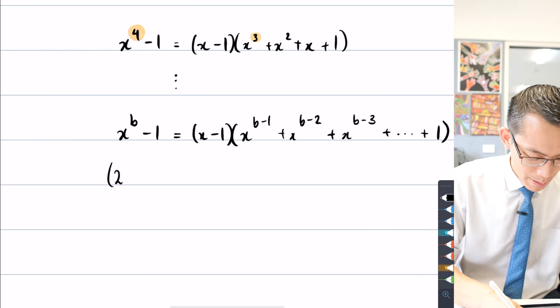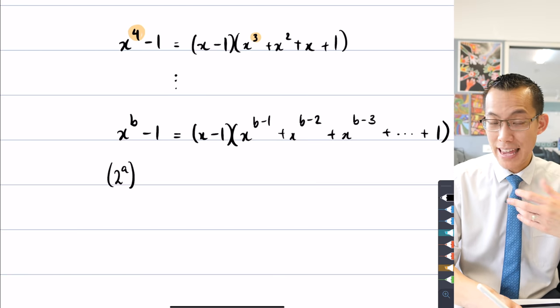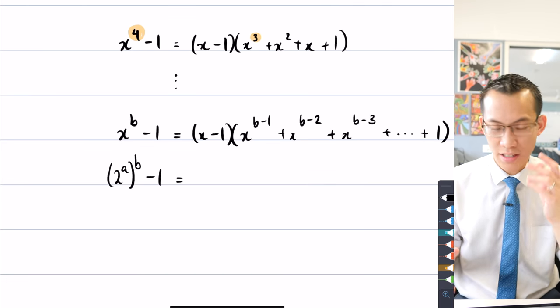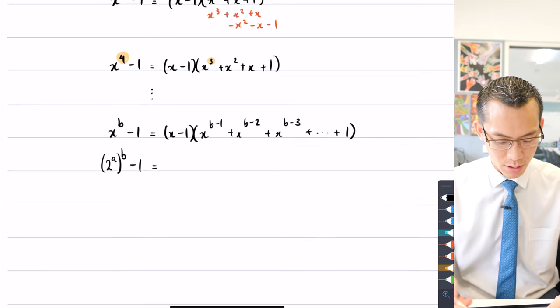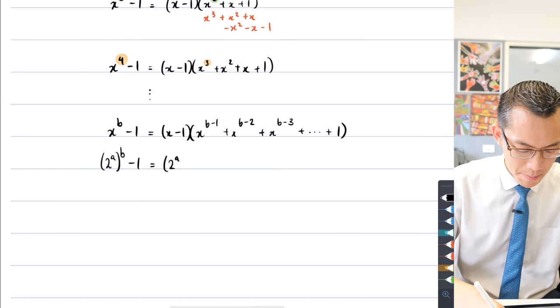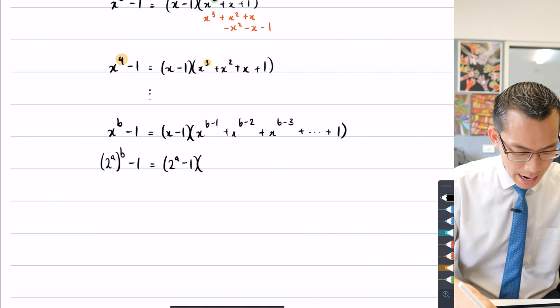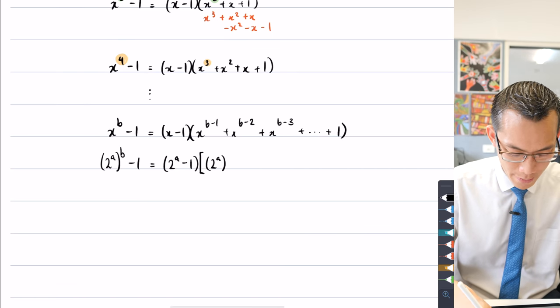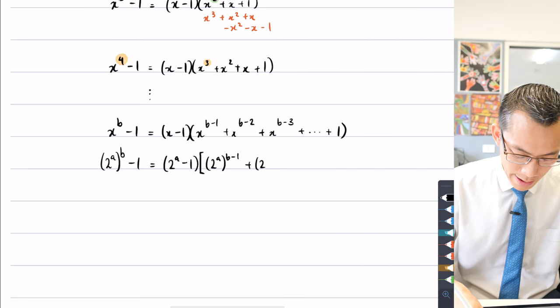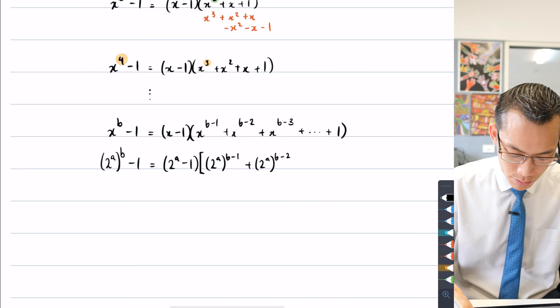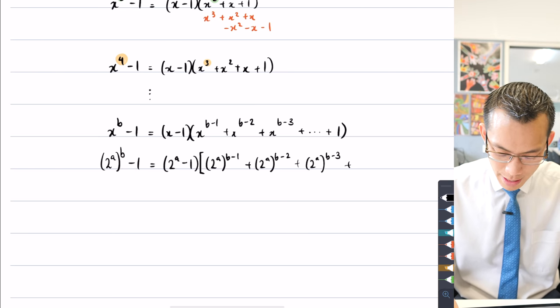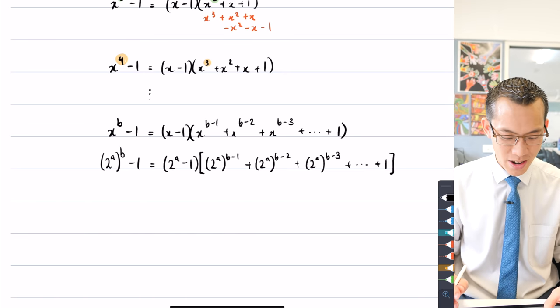So I'm just going to go ahead and write (2^a)^b - 1 equals, alright, everywhere that I had x I'm just going to substitute it for 2^a. So let's have a go, (2^a - 1) and then what have I got here, maybe I'll draw a bigger bracket so I can fit in my (2^a)^(b-1), (2^a)^(b-2), one more time to complete the pattern, (2^a)^(b-3) and then dot dot dot all the way to 1. Alright, so what have I got here?